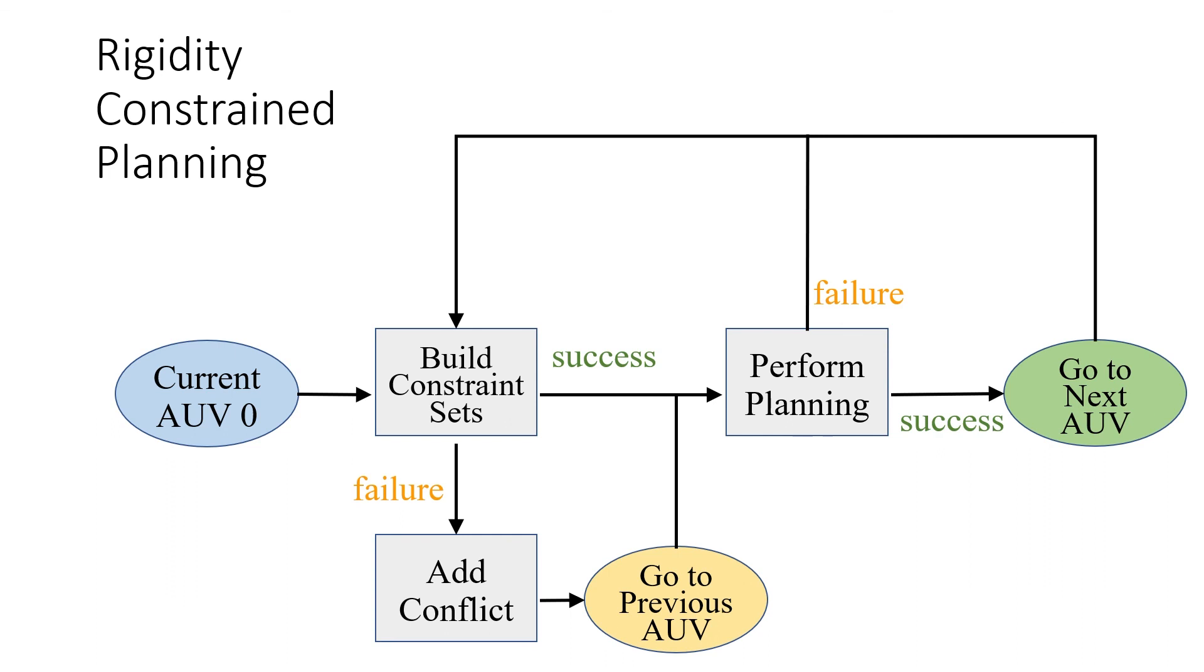If no failures occur in the planning phase or while generating the constraint sets, then the planning framework will iterate over all AUVs in the network and generate a trajectory for the entire network which maintains a pre-specified rigidity at every given time step.